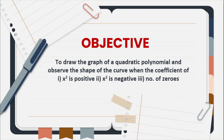हमें एक quadratic polynomial का graph plot करना है और हमें ये तीन cases observe करने हैं कि जब x square का coefficient positive है तब आपका graph कैसा बन रहा है, जब x square का coefficient negative है तब आपका graph कैसा बन रहा है, उस graph में curve की shape क्या है, और third part में किसी भी quadratic polynomial का number of zeros कितने हैं? By observing its graph and factorization method.